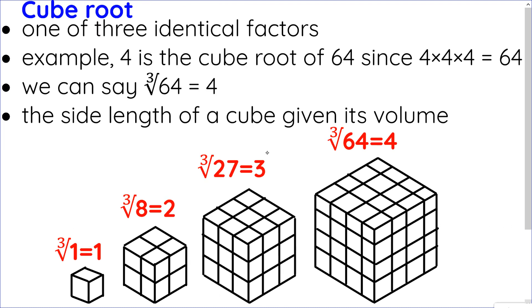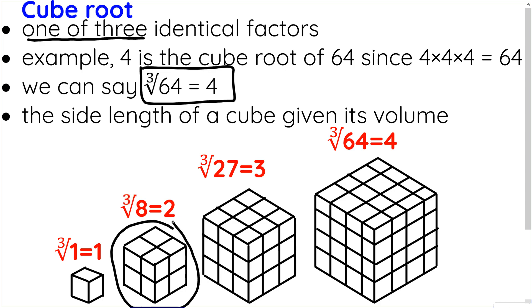The cube root, going backwards, is one of three identical factors. Back to the example of 64: since 4 times 4 times 4 is 64, the cube root of 64 is 4, which is just one of those factors. Pictorially, this means finding the side length given the volume. If the volume is 8 — there are 8 little cubes — the side length is 2 by 2 by 2. Therefore, the cube root of 8 is 2.